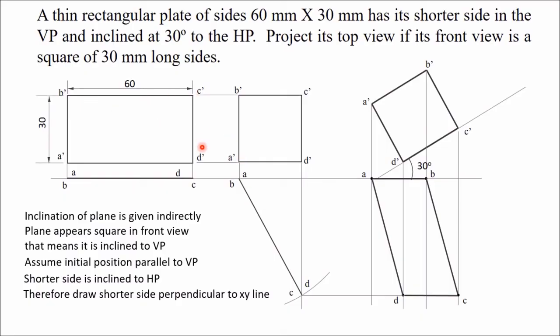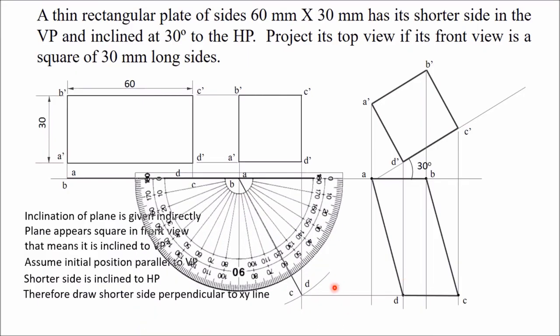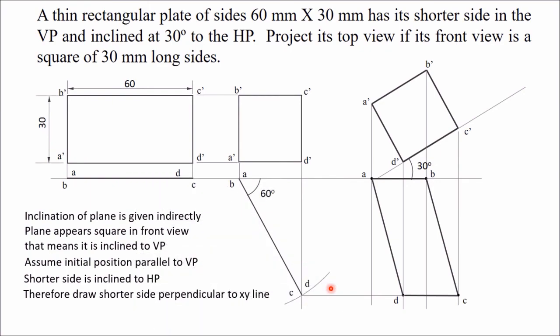We still don't know the angle of this plate with VP, but that angle can be determined — just measure it using a protractor. When you measure this angle, you can see it comes out to exactly 60 degrees. Mark this as 60 degrees. In this way you can complete the projection of this plate. Thank you for watching this video.